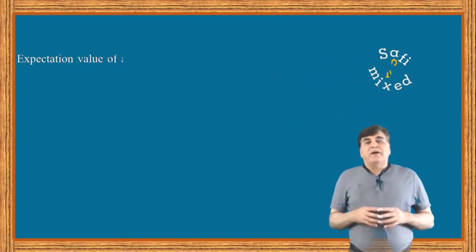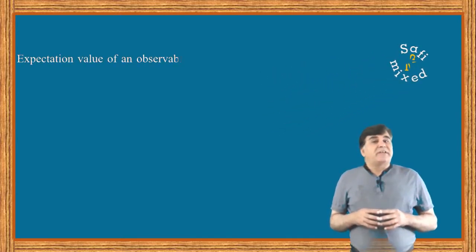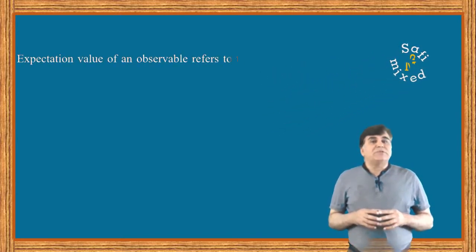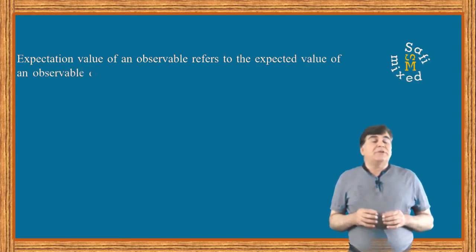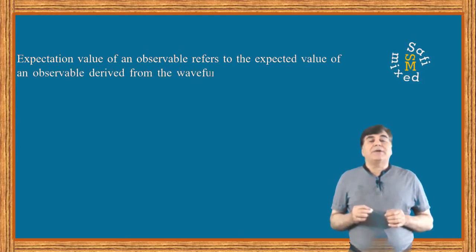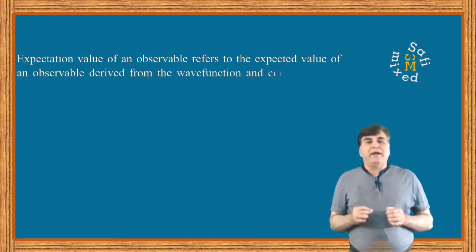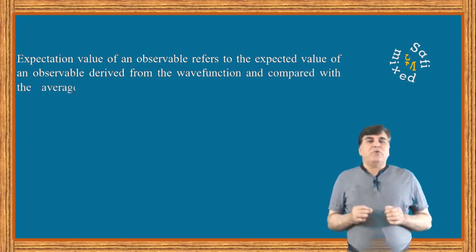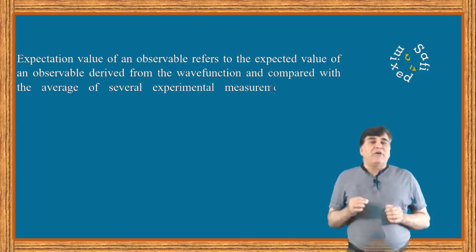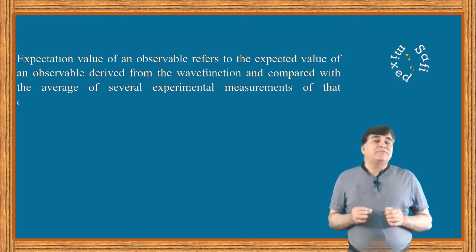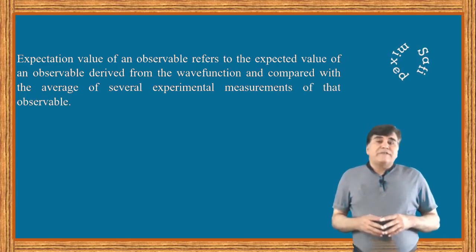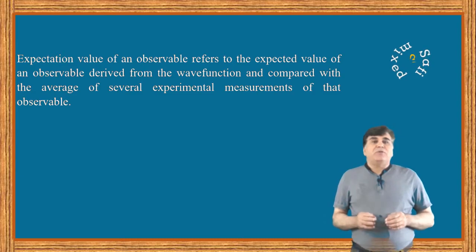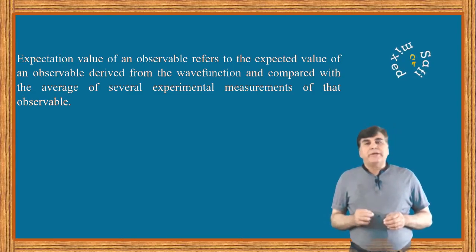Expectation value of an observable refers to the expected value of an observable derived from the wave function and compared with the average value of several experimental measurements of that observable.